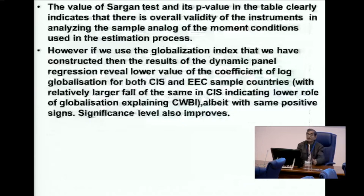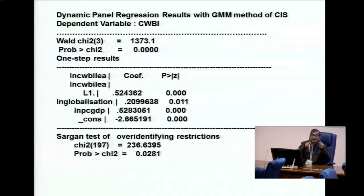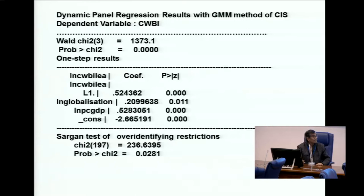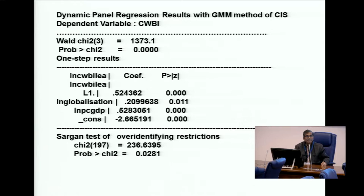All the trends are given in the paper. From our dynamic panel regression analysis, in the case of CIS, we assumed a log-linear relationship between globalization and per capita GDP, where the dependent variable is the composite well-being index (CWBI). I found that globalization and per capita GDP explain cross-country and cross-time variations in the composite well-being, and these two factors have played a significant role.